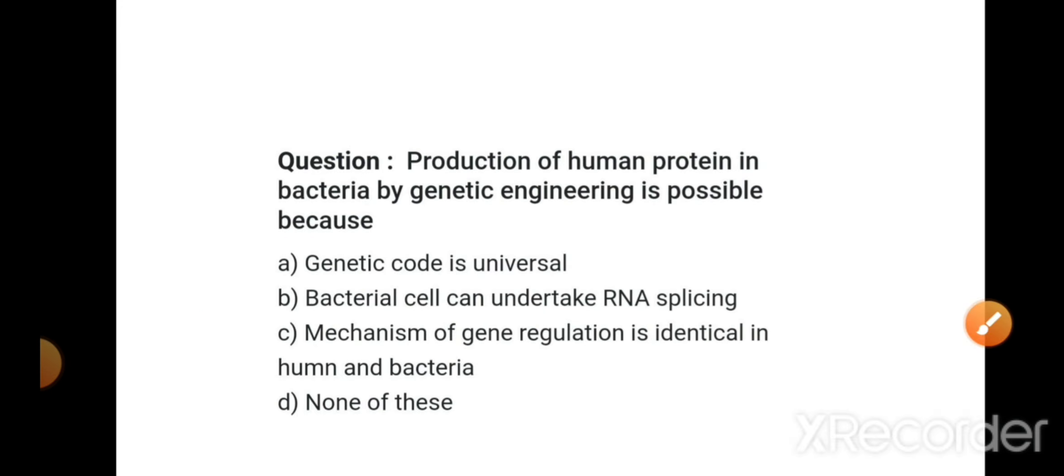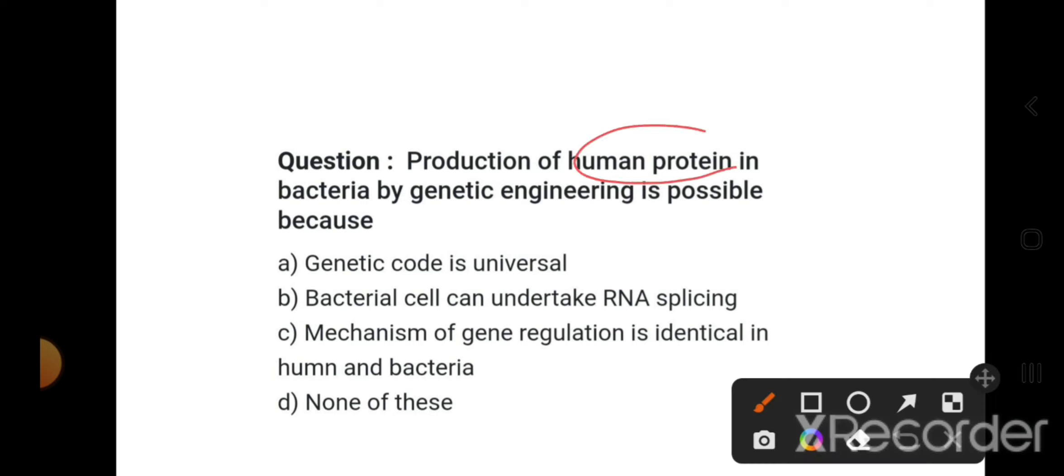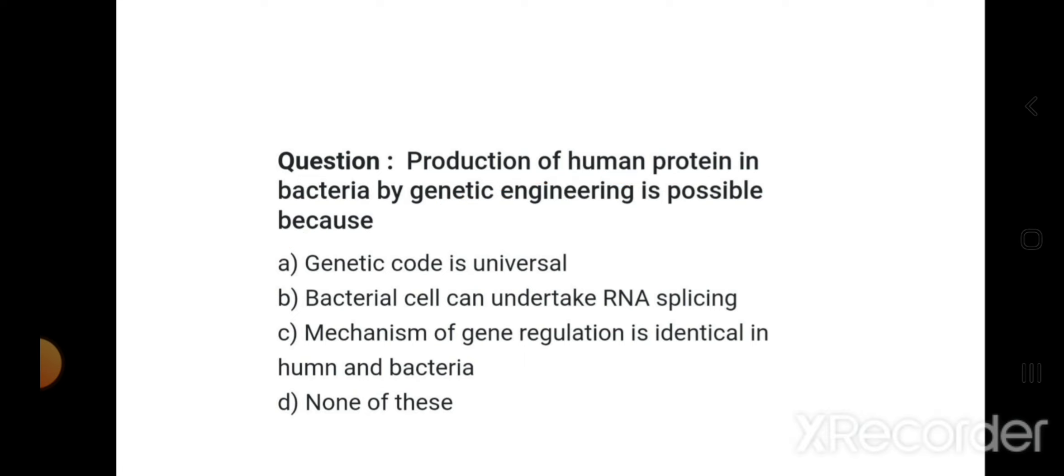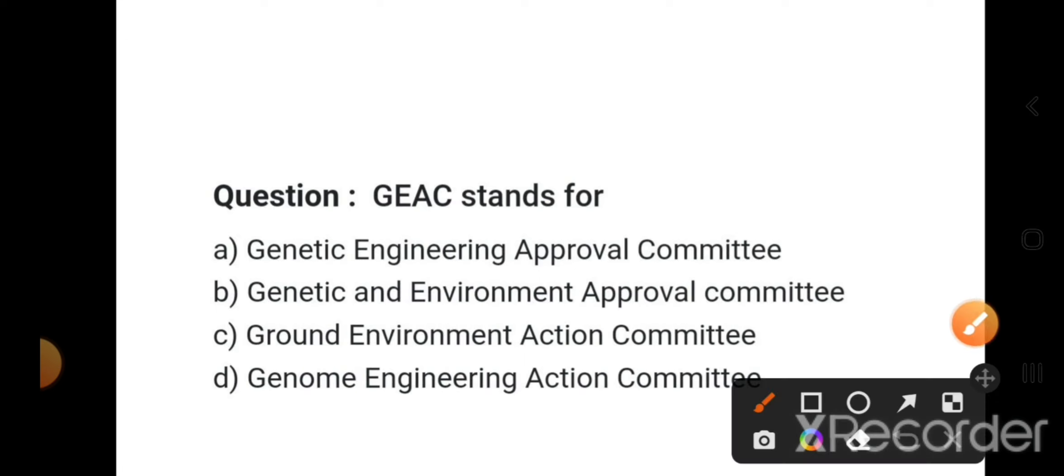Production of human protein in bacteria by genetic engineering is possible because the genetic code is universal. This is the full form and the right answer. What are the benefits of genetically modified crops? Biosafety and research to allow this committee.